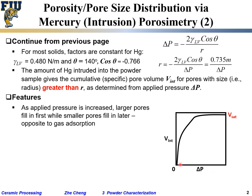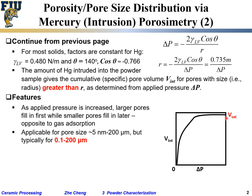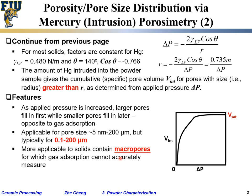Starting from delta P equal to zero — no applied pressure — the intrusion volume is zero. As we step up the applied pressure, more and more mercury penetrates and the volume increases until saturation. In principle, mercury porosimetry can be applied to pore sizes from 5 nanometers all the way to 200 microns, but in reality people typically use it between 0.1 microns and 200 microns, making it more applicable for solids containing macropores and large pores.